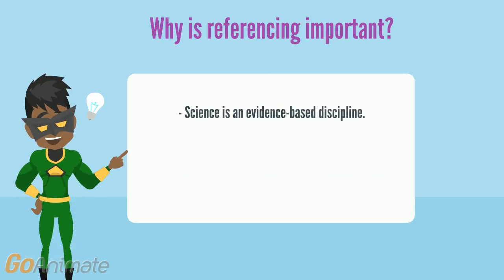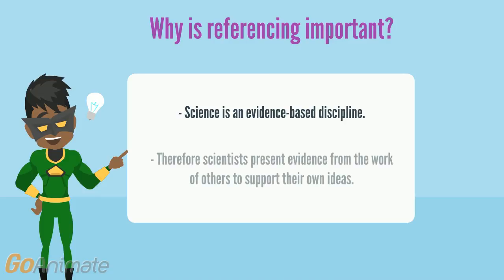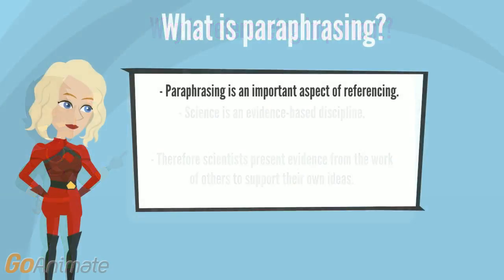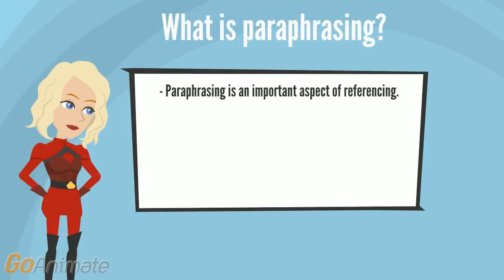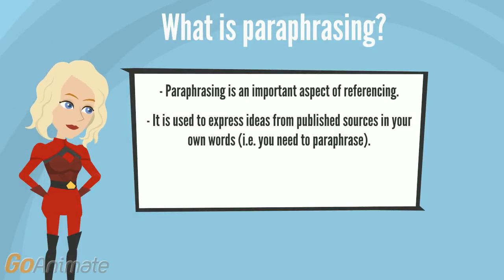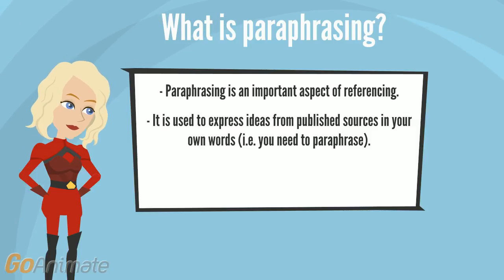Why is referencing important? Science is an evidence-based discipline. Therefore it is important that scientists use evidence from the work of others to support their ideas. Paraphrasing is an important aspect of referencing. When you want to use information and ideas from published sources, you need to express them in your own words by paraphrasing.